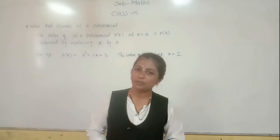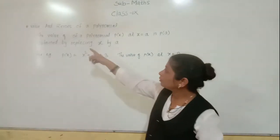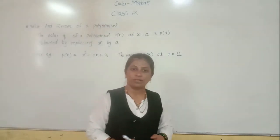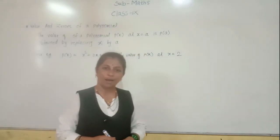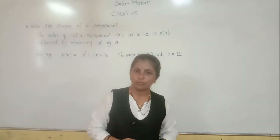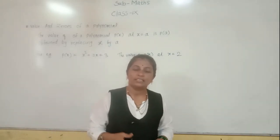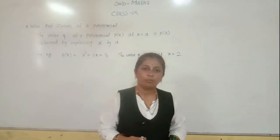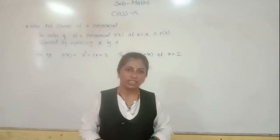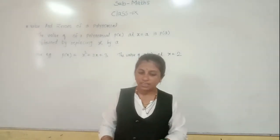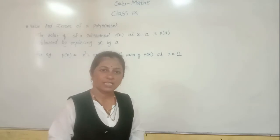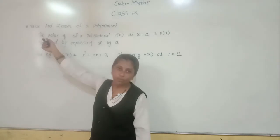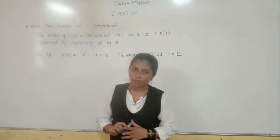Good morning students. Today we are going to see the value and zeros of a polynomial. In the previous period, we learned about the introduction to polynomials: types of polynomials, how to identify a polynomial in one variable or two variables, what is the degree, and what is the coefficient of each term. Now, today in this lecture, we will see what is the value of the polynomial and the zeros of the polynomial.